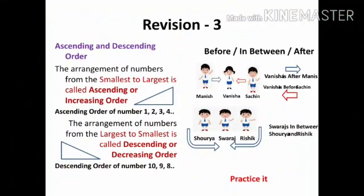In another revision, we are going to see ascending and descending order. Please understand, the arrangement of numbers from smallest to largest is called ascending order or increasing order. For example, ascending order of numbers 1, 2, 3, 4 means small to big.